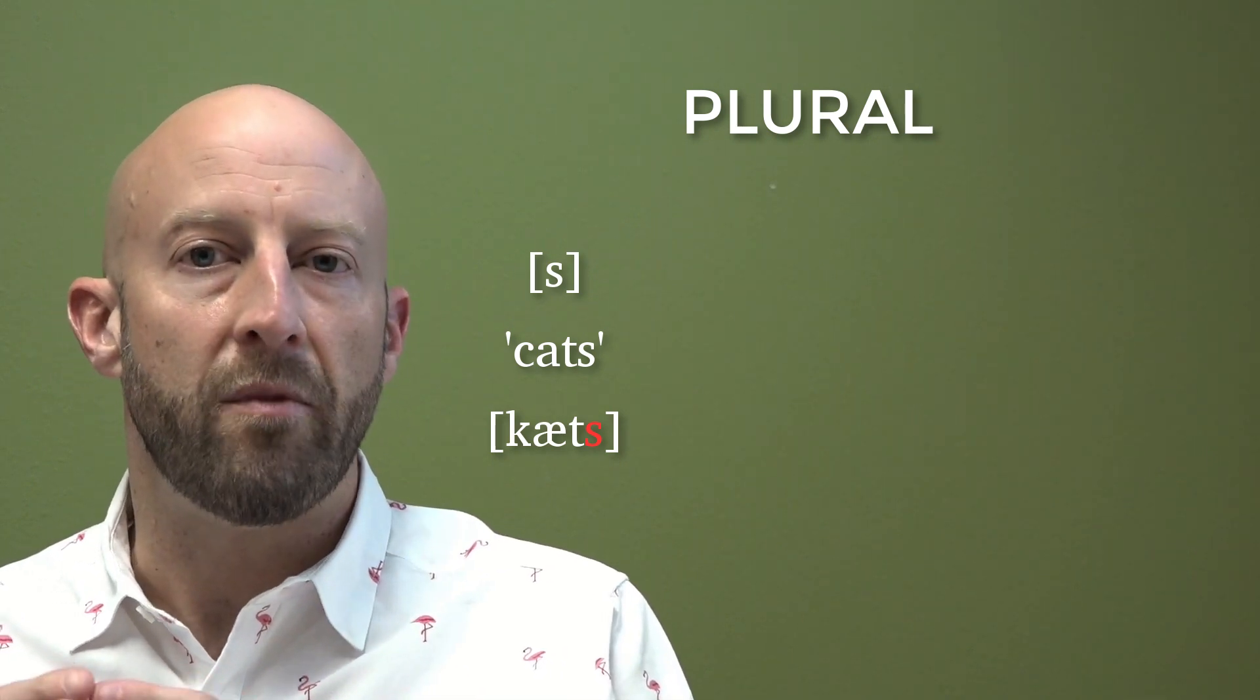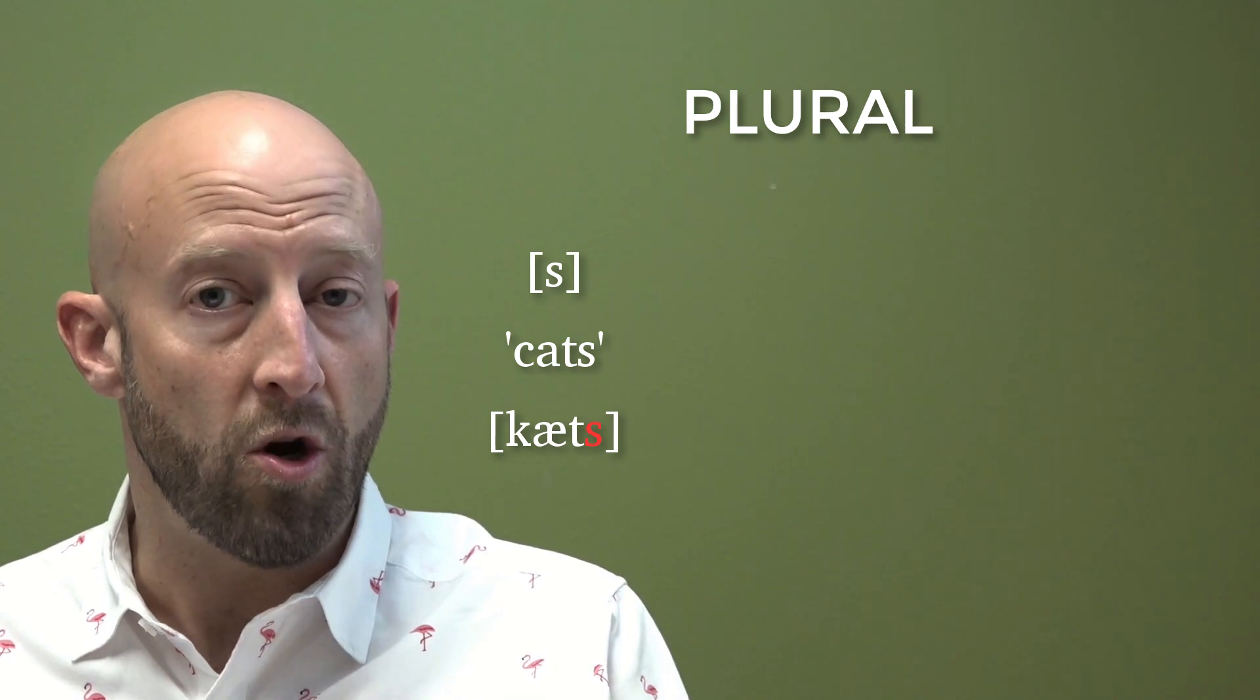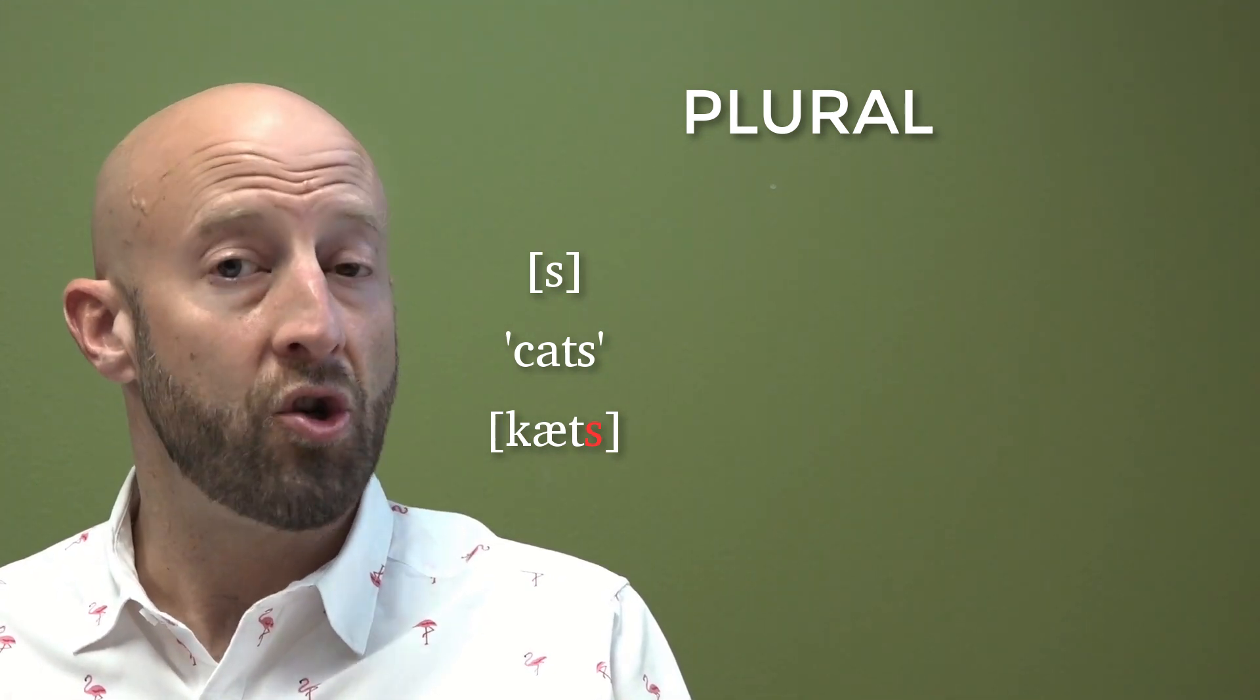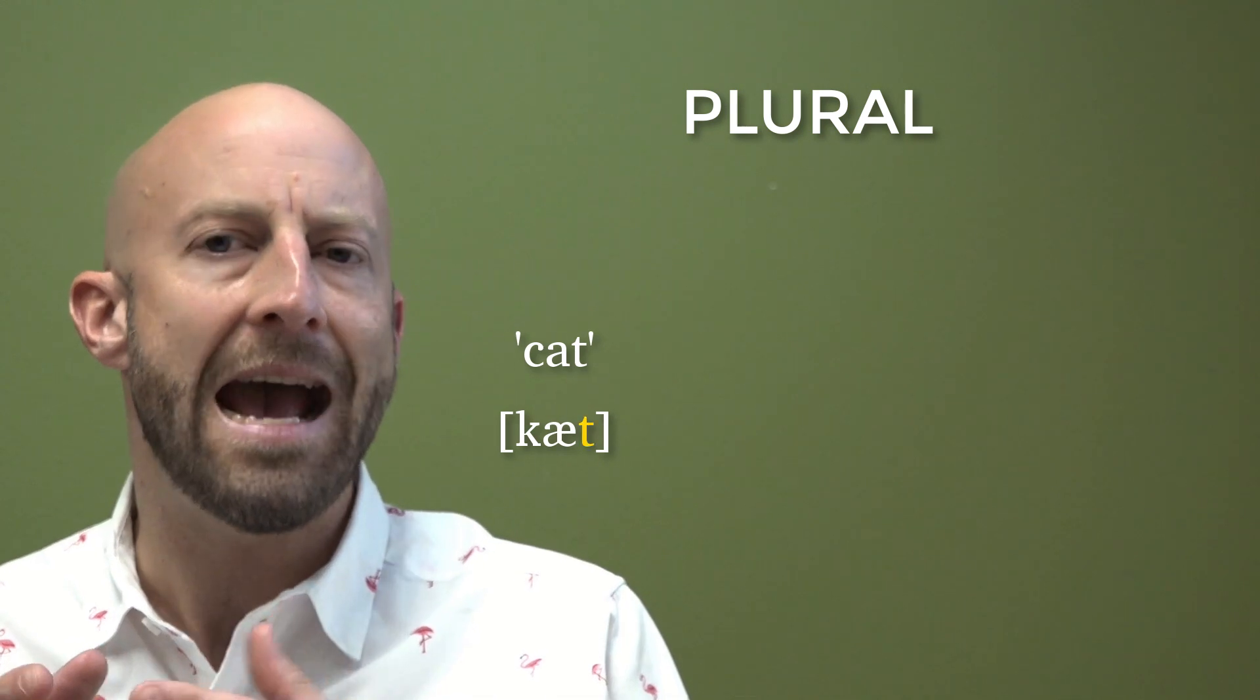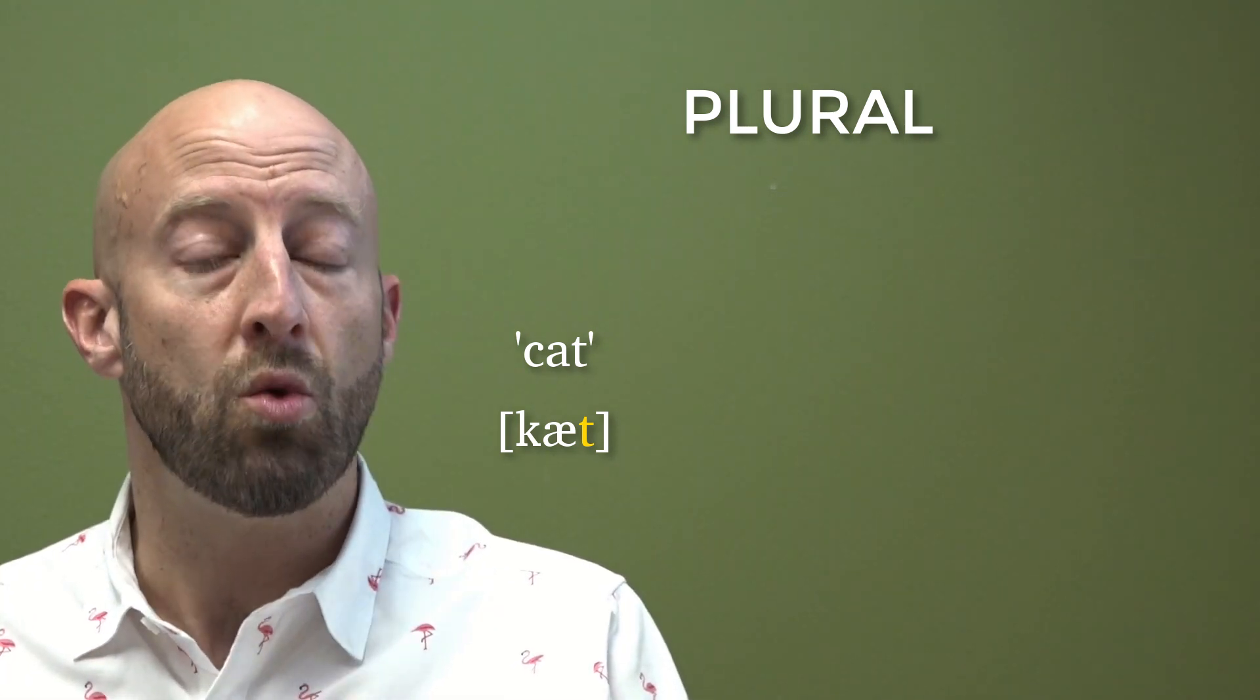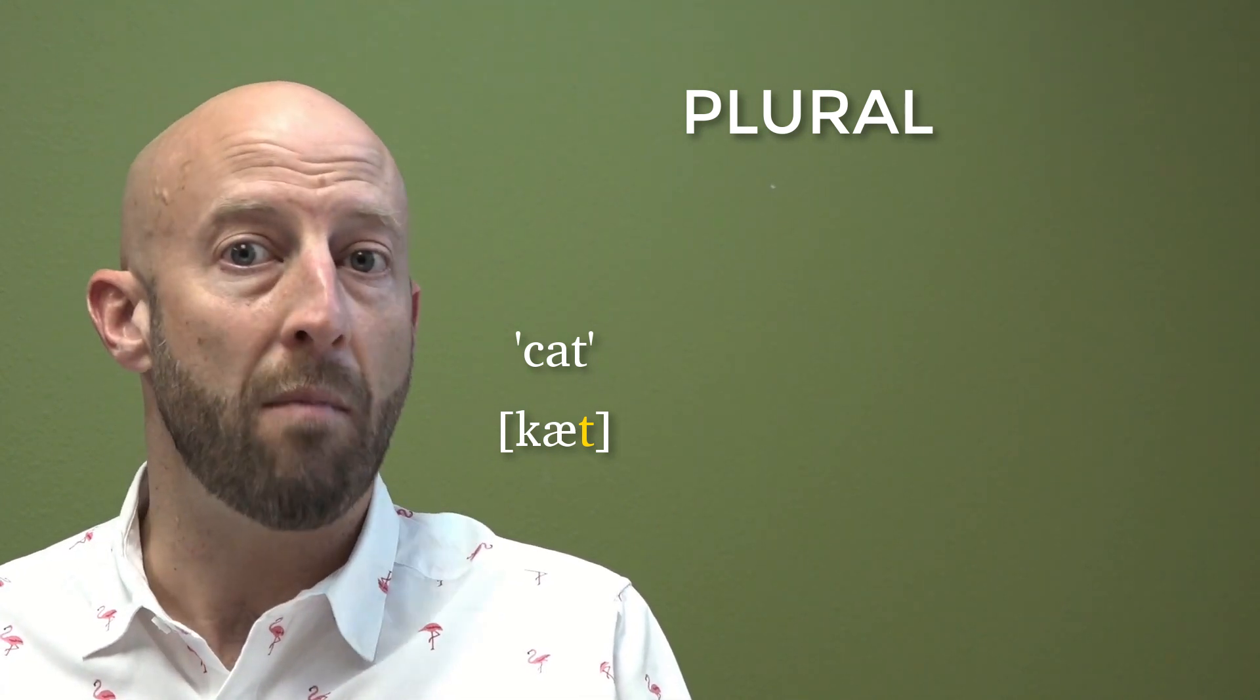So going back to that first example, the s at the end of cats as we write it, just disregard how it's written, concentrate on what you actually hear and what you produce when you say the word. So when you say cats, you'll notice that that final sound is /s/ written with an s in the international phonetic alphabet. So there's good reason why that specific allomorph, /s/, will appear in this environment, specifically because cat ends with /t/, which is a voiceless sound. So by virtue of a phonological process called assimilation, which means one sound becoming more like its neighboring sound, cat, /t/, ending in that voiceless sound, will require a voiceless sound to come after it.